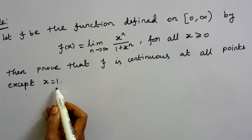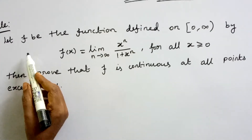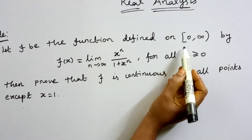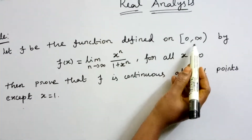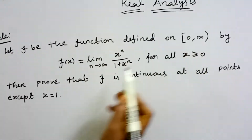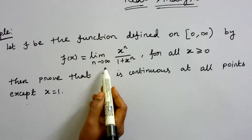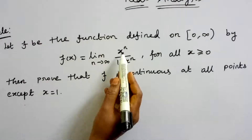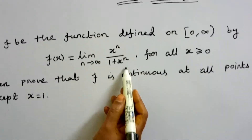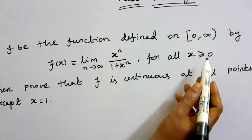That is, we have a function defined on the half-closed interval [0, ∞). If we define f(x) = lim(n→∞) xⁿ/(1 + xⁿ) for all x ≥ 0.